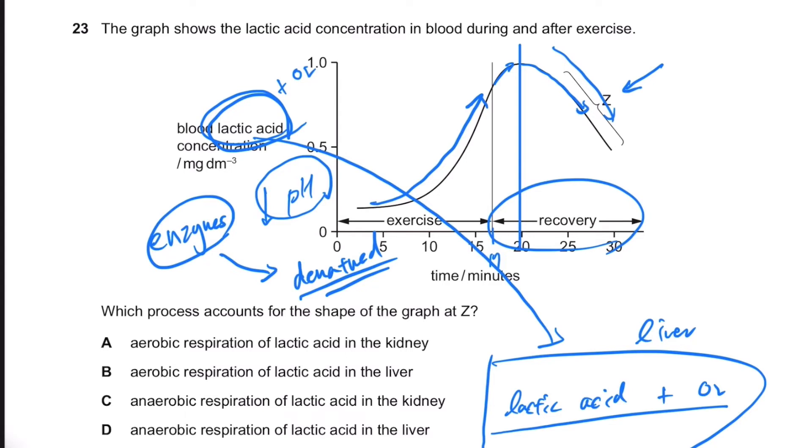So this, since it requires oxygen that's already aerobic, not anaerobic. So the answer is either between, either one of A or B. So aerobic respiration of lactic acid in the liver is the correct answer.